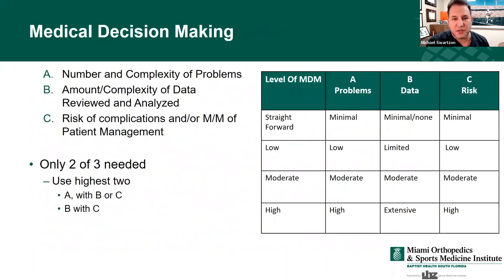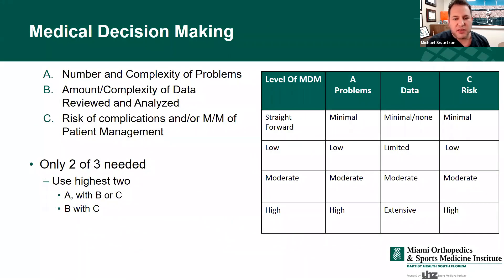Now, medical decision making. There are three parts: the number and complexity of problems (column A), the amount of data reviewed (column B), and the risk of complications (column C). You plug each one in, and the highest two out of three is what meets your level of medical decision making.